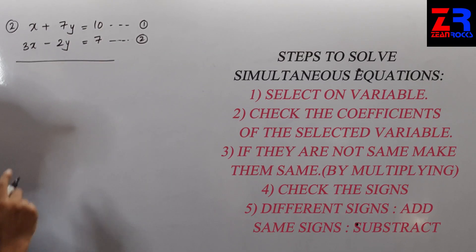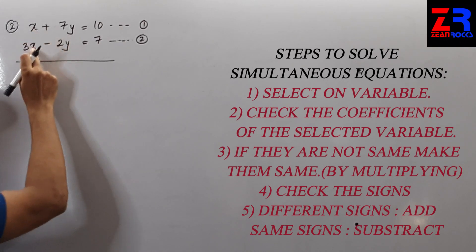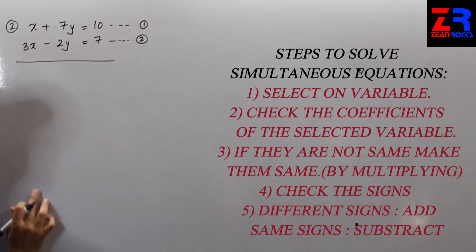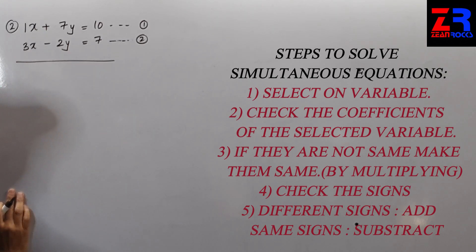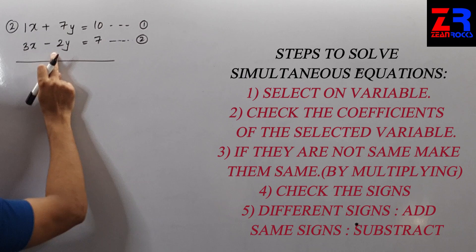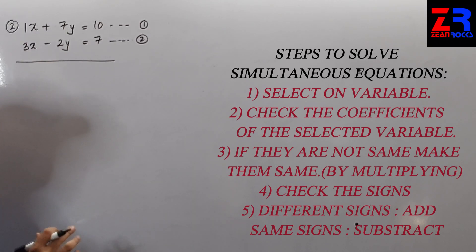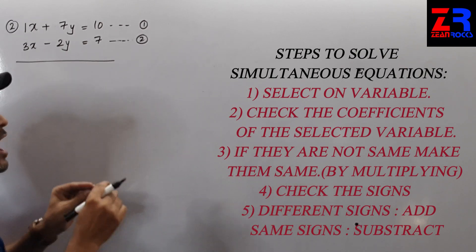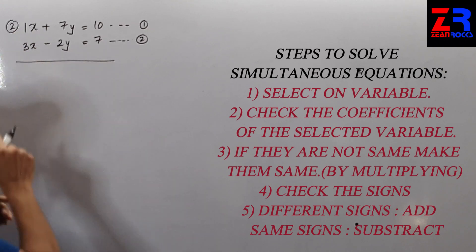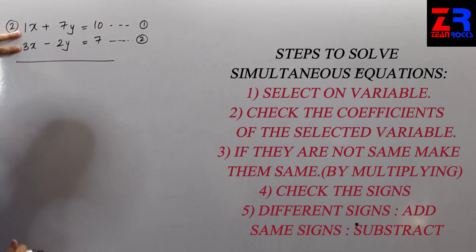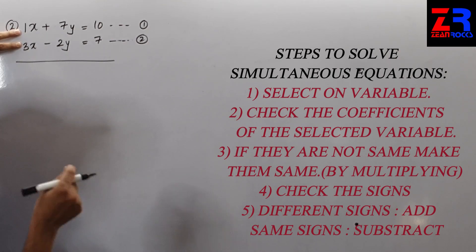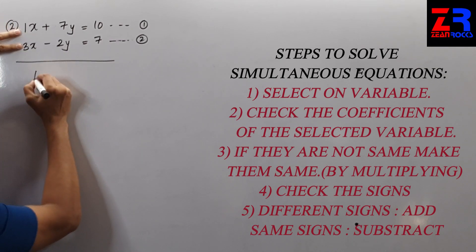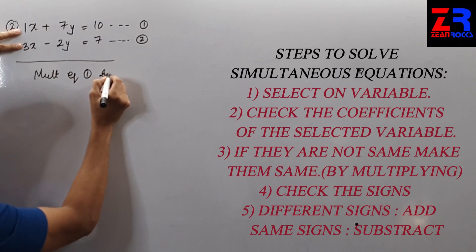Question 2: my first step is to select a variable — x or y. Checking the coefficients: for x they are 1 and 3 — not the same. For y they are 7 and minus 2 — not the same either. If neither can be selected directly, I need to make the coefficients the same. If I multiply equation 1 by 3, then x will have coefficient 3 in both equations. I will multiply equation 1 by 3.